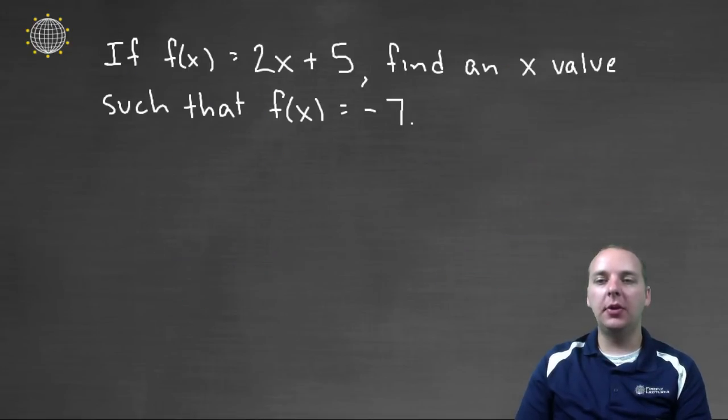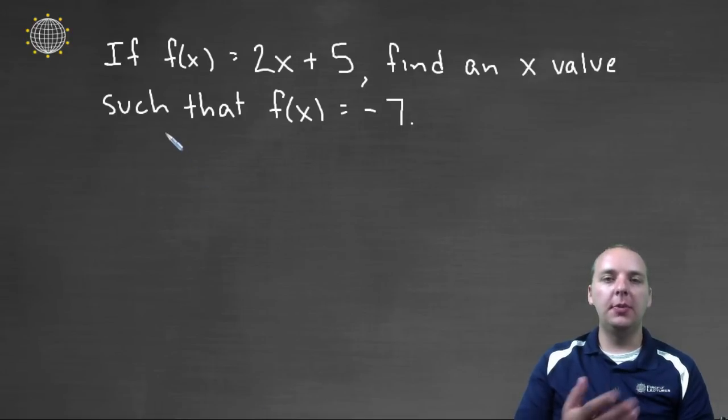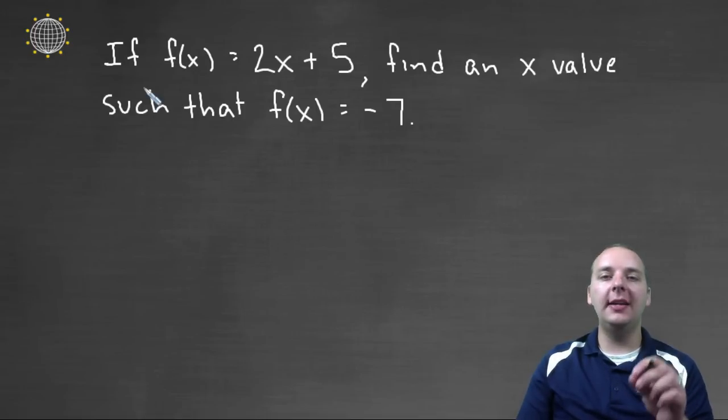Now the last thing I want to talk about in this video is a closely related problem to evaluating functions that often times gives students a lot of trouble. So let me show it to you. It says, if f of x equals two x plus five, like it did on the previous page, then they want us to find an x value such that f of x would equal negative seven. They're not saying take negative seven and plug it in. They're asking what x values would give us negative seven as an answer.